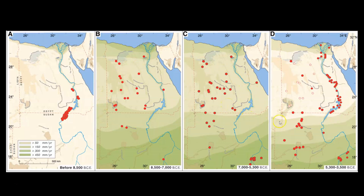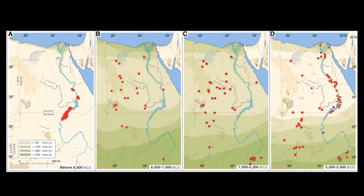Then circa 5000 BCE, the rains stop, the pyramids become inoperational, and the Sahara Desert reclaims this entire area. We then see the re-centralization of the civilization back around the Nile River and the beginning of the dynastic Egyptian period.